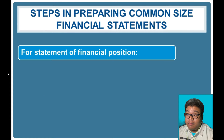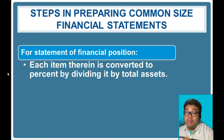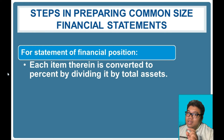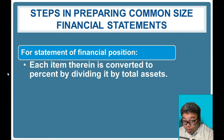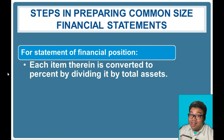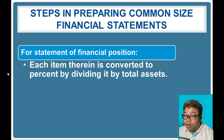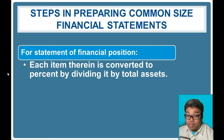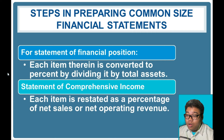Steps in preparing a common size statement: for the statement of financial position, each item is converted as a percentage of total assets — for example, cash divided by total assets, inventory divided by total assets, and so on, until total assets divided by total assets yields 100%. We call total assets and net sales the base amounts for common size statements. For the statement of comprehensive income, we use net sales or net operating revenue.